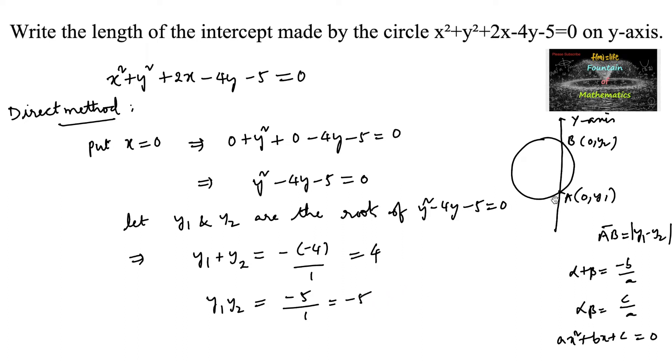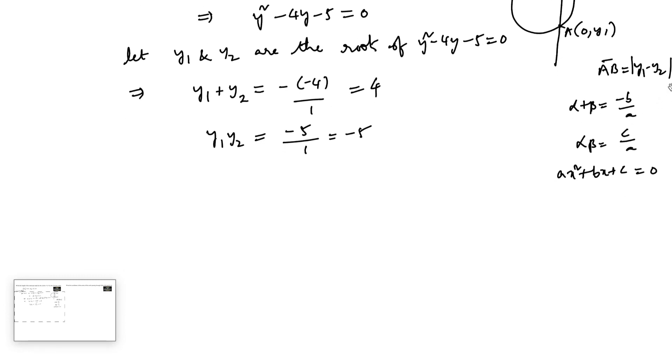To find |y₁ - y₂|, we know that (y₁ - y₂)² = (y₁ + y₂)² - 4y₁y₂, that is 16 + 20, which is 36.